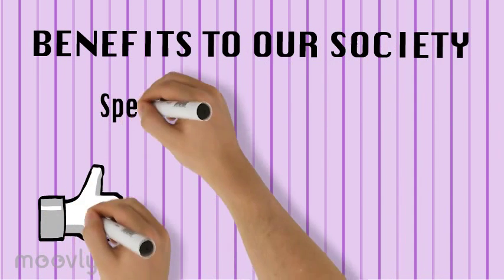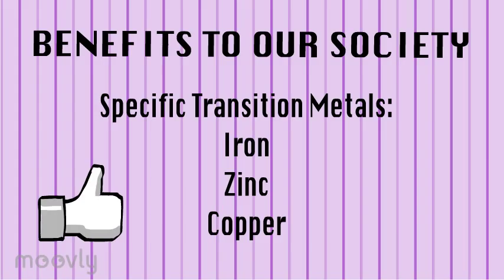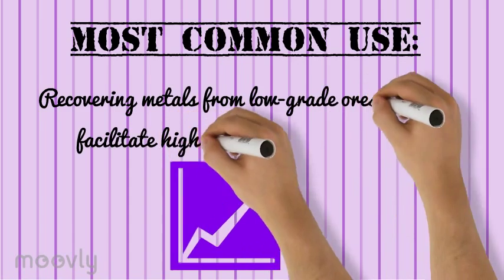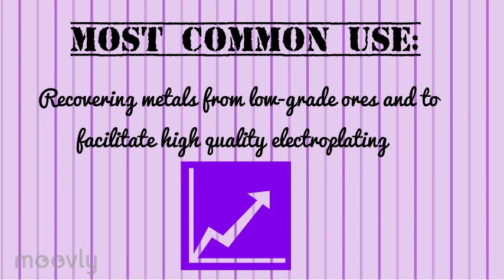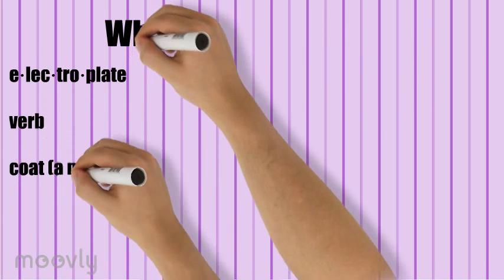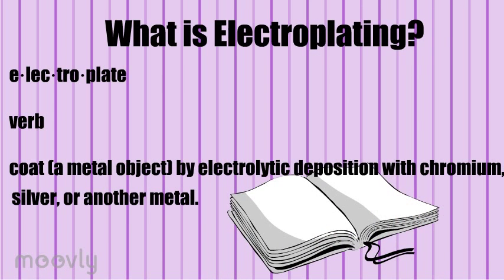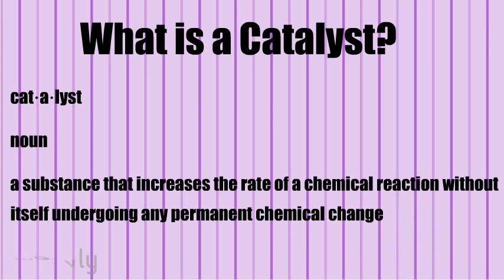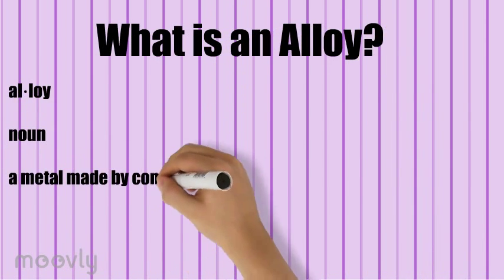I will now be talking about the benefits of transition metals in our society. The main transition metals I'm going to discuss are iron, copper, zinc, and a few other elements. Transition metals are extremely useful because of their lack of corrosion and strength. The most common use is that they recover metal from low-grade ores and facilitate high-quality electroplating. Electroplating is when a metal object is coated by electrolytic deposition with another metal. Transition metals are also used directly as catalysts in industrial chemical processes — a catalyst being a substance that increases the rate of a chemical reaction without itself undergoing any permanent change. Alloys are a mixture of one metal with another metal or non-metal substance.